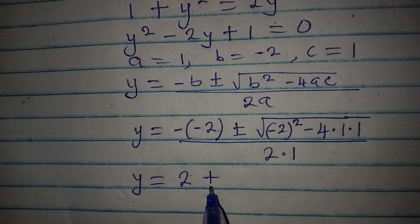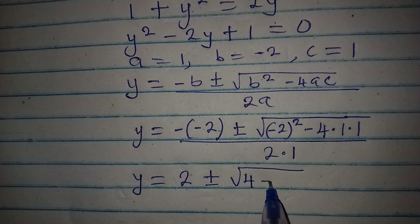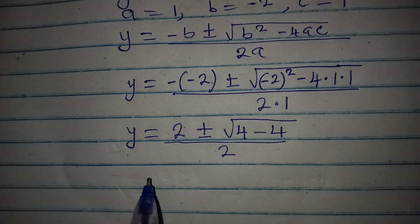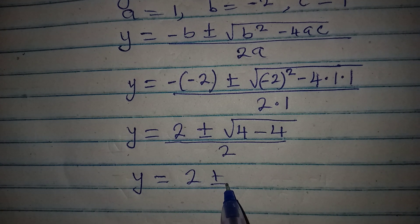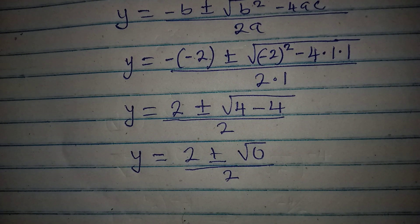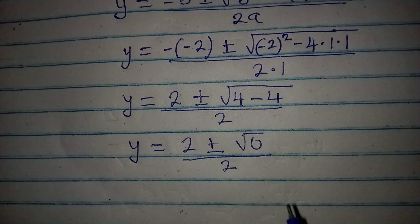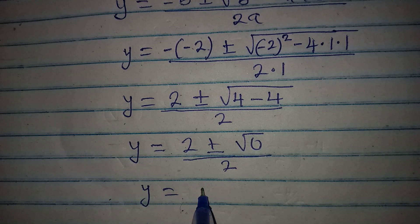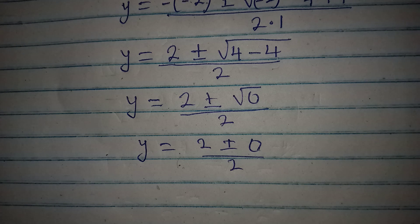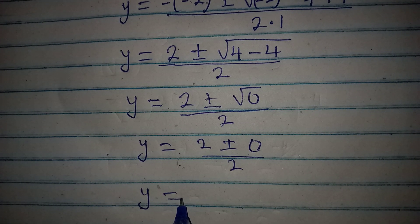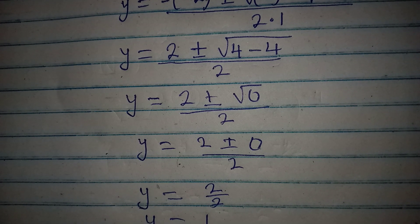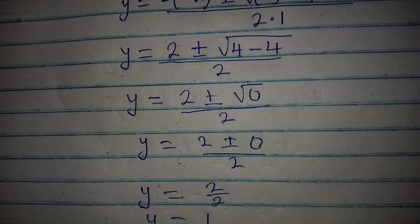This means y equals positive 2, plus or minus the square root of 4 minus 4, all over 2. So y equals 2 plus or minus the square root of 0, over 2. The square root of 0 is 0, and adding or subtracting 0 is the same thing. So y equals 2 over 2, which gives y equals 1.